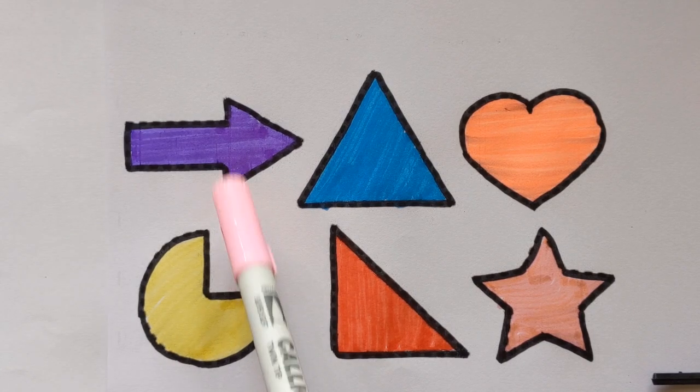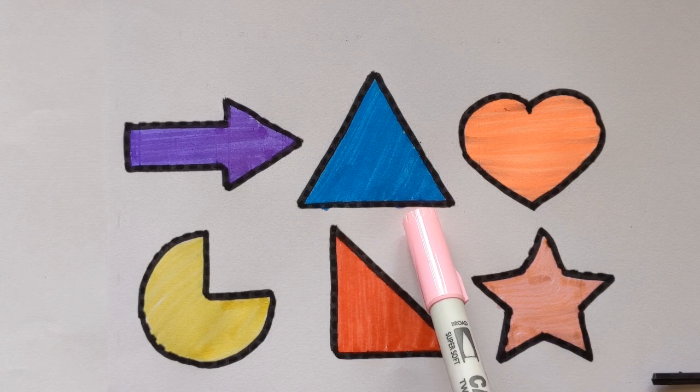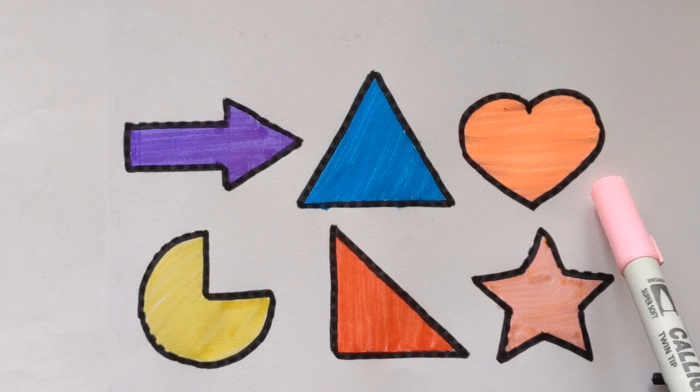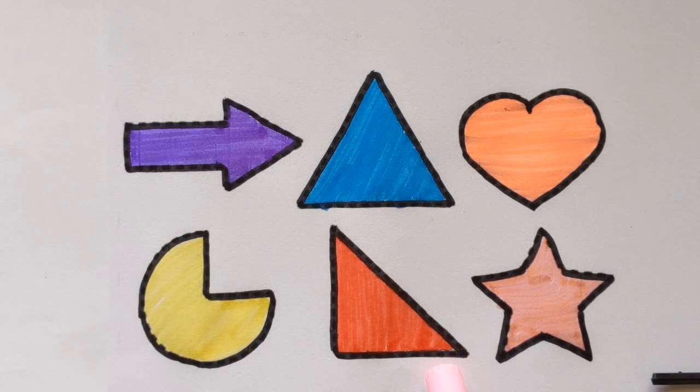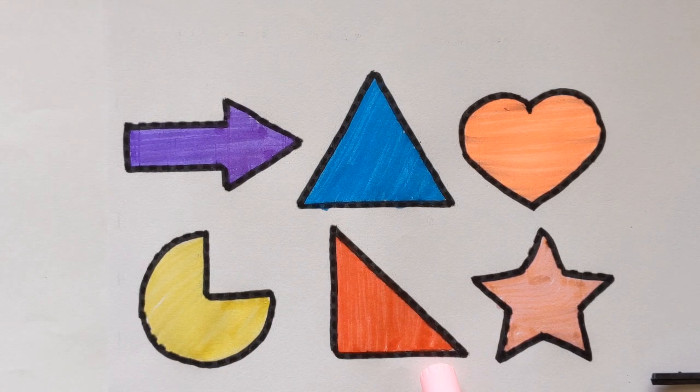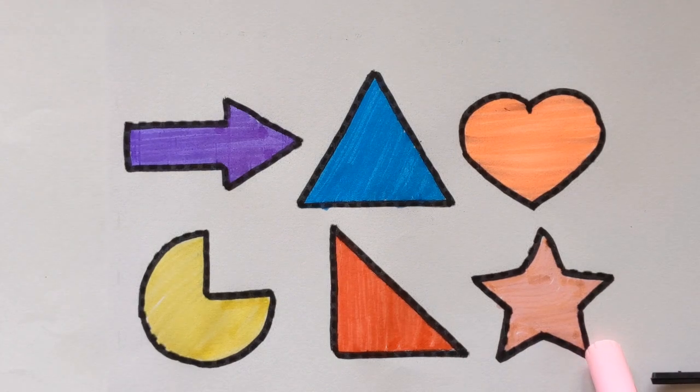Arrow, violet color. Triangle, sky blue color. Heart, orange color. Pie, yellow color. Right angle triangle, red color. And star, light pink color.